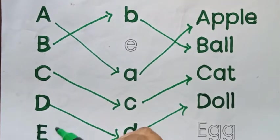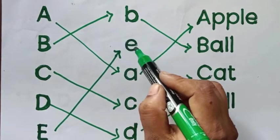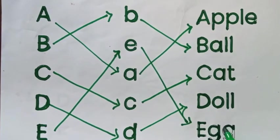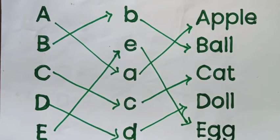Capital letter E, Small letter E, E for Egg. E, Double G. Egg, E for Egg.